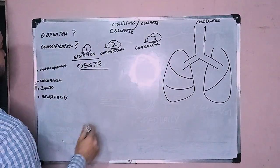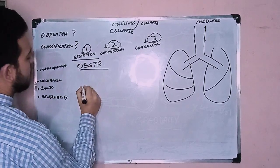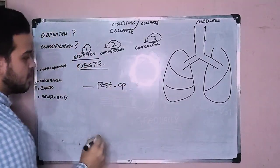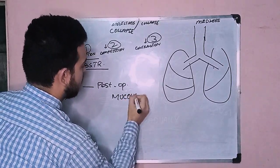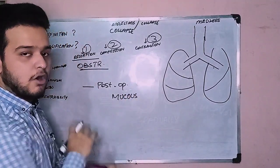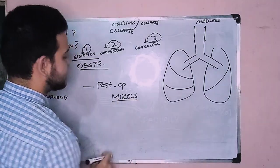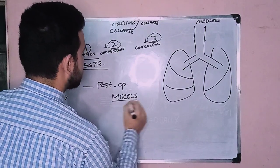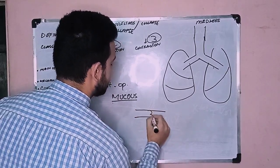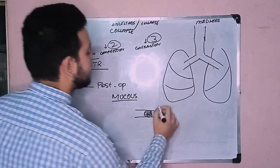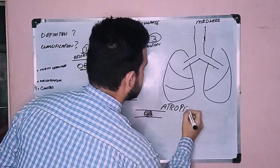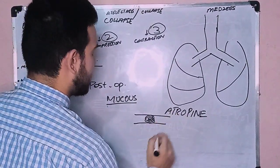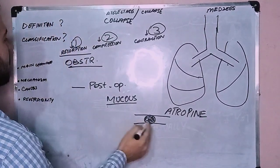The causes for resorption atelectasis are many. There is post-operative resorption atelectasis, which happens because of mucus plugs that form in the respiratory tract. As the patient is under anesthesia, airway movement is reduced, so mucus gets stuck. The patient is also given atropine, a drug to control secretions and keep the respiratory tract relaxed, which further contributes to mucus plugs causing atelectasis.